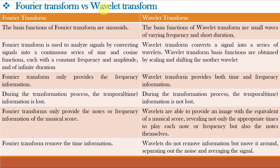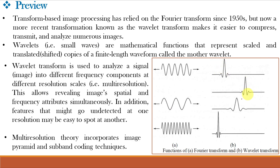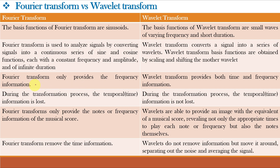For Fourier transform, the basis functions are sinusoids of varying frequencies, whereas for wavelet transform, the basis functions are small waves of varying frequencies and short duration. Fourier transform analyzes signals by converting them into a continuous series of sine and cosine functions, each with a constant frequency and amplitude and of infinite duration, whereas wavelet transform converts the signal into a series of wavelets. Wavelet transform basis functions are obtained by scaling and shifting the mother wavelet. Fourier transform provides only frequency information — the time information is lost when transforming from the time domain to the frequency domain. Wavelet transform provides both time and frequency information, and the temporal information is not lost during transformation.